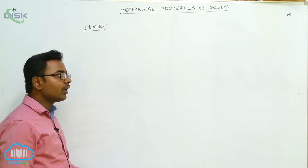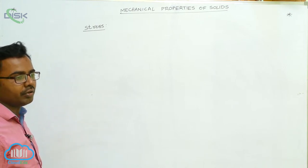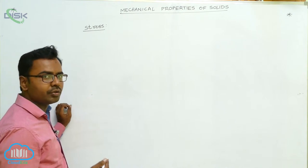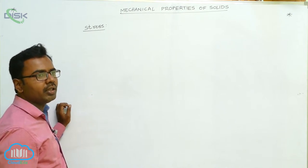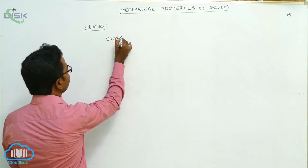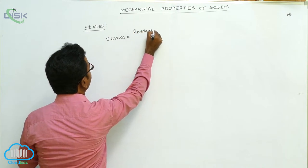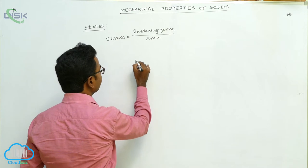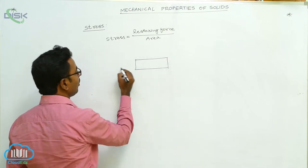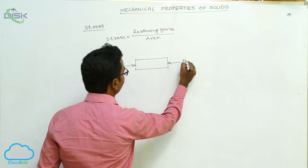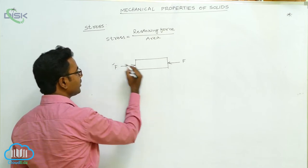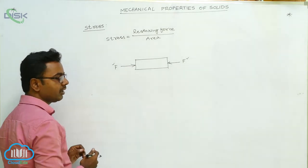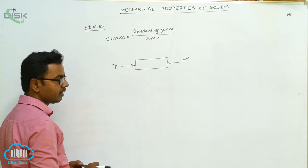Stress is defined as the restoring force developed per unit area of the body. Stress = Restoring Force / Area, or equivalently, Applied Force / Area. For example, consider a body on which we apply a force F to compress it. F is the deforming force. On removal of F, the body regains its original size and shape if it is elastic.